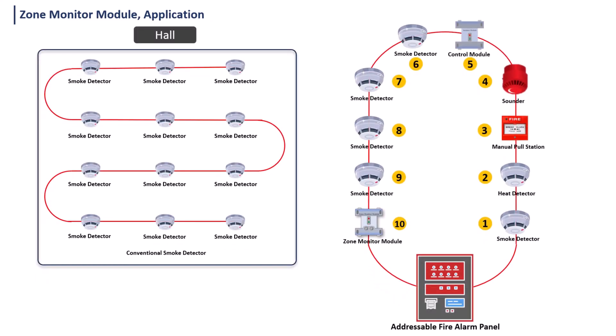The zone monitor module is used in the following applications. When designing an addressable fire alarm system, if there is an area where a conventional system is already installed and external wiring cannot be done, a zone monitor module is used to connect the conventional system with the addressable fire alarm. Also, in a small hall where a conventional detector is installed, the pin location of the detector is not needed and we want to reduce cost — in that case we also use a zone monitor module.